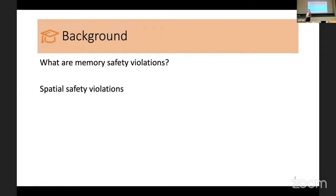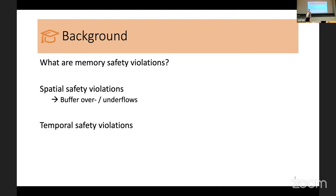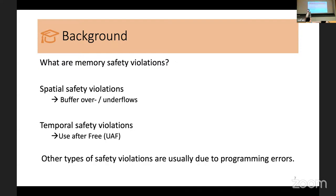Memory safety violations can be categorized into two different classes. The first is spatial safety violations, such as buffer overflows or underflows. The second would be temporal safety violations, such as use-after-free — when you use an allocation after it was freed. Other types of safety violations are usually due to programming errors, so we won't go into them right now.